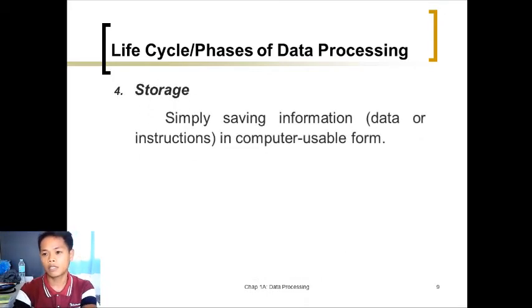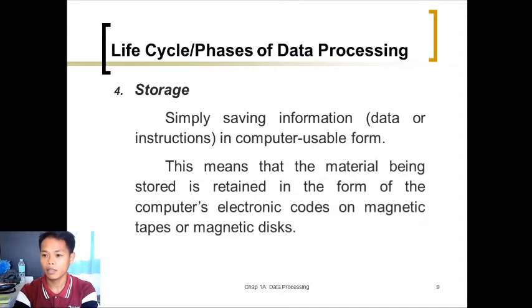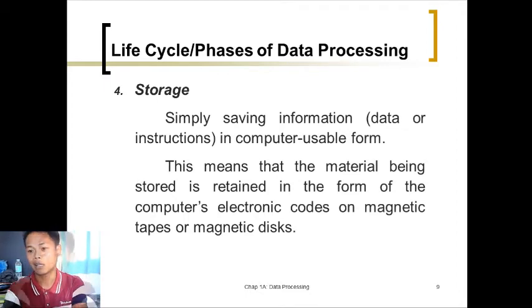Storage: Simply saving information, data, or instructions in computer usable form. This is where data processing results can be saved. Once we save, we can open it later if we forgot something. Unlike a calculator, which doesn't save. The material being stored is retained in the form of the computer's electronic codes on magnetic tapes or magnetic disks. Files like videos and images are converted into computer's electronic codes and saved onto magnetic tapes.